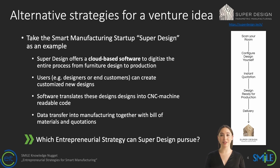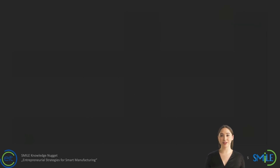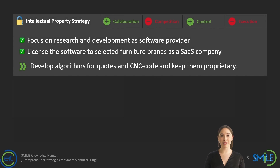The first strategic option for Super Design is to pursue an intellectual property strategy. Under this strategy, they would protect their software through secrecy or patents and make it available as a cloud service with standardized interfaces to furniture brands. The selected furniture brands would embed the licensed software into their systems by linking it to a configurator at the customer interface or making it accessible to their in-house designers.